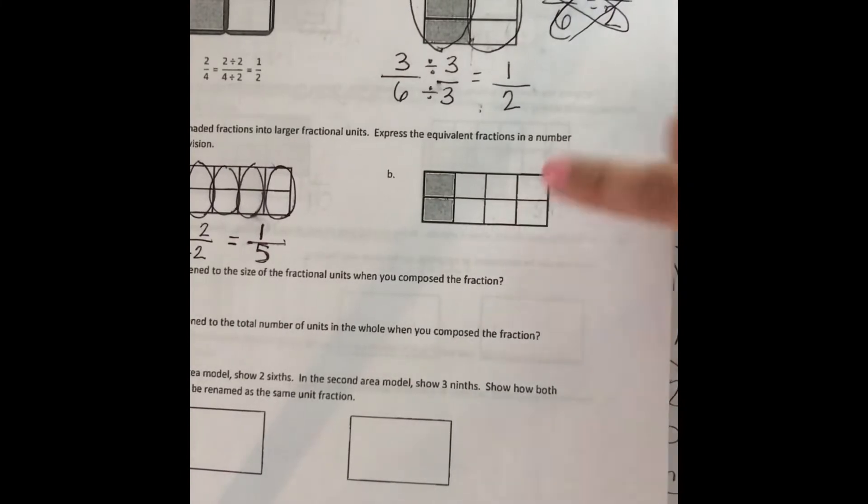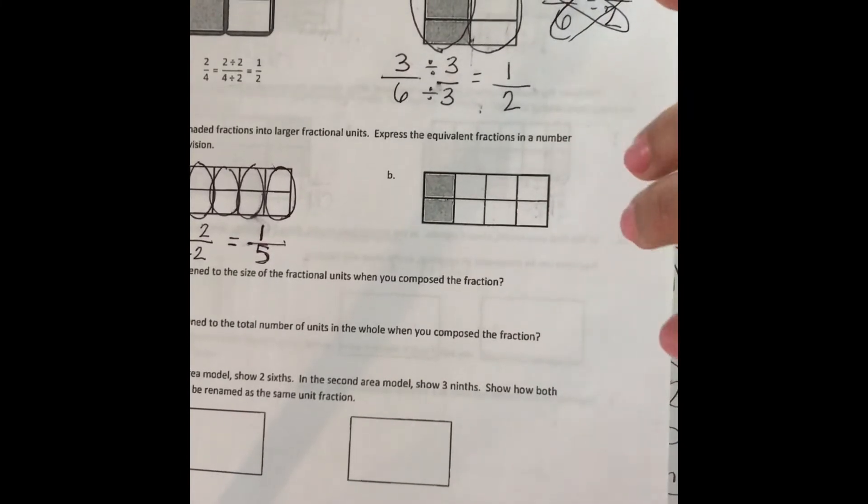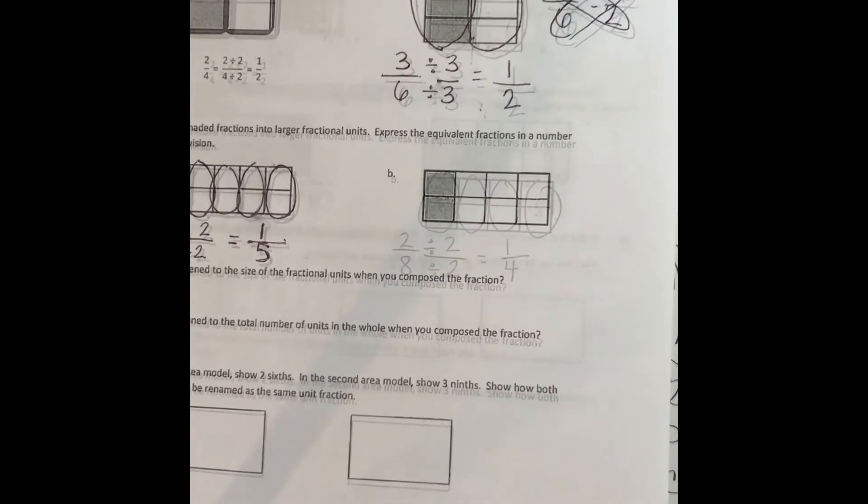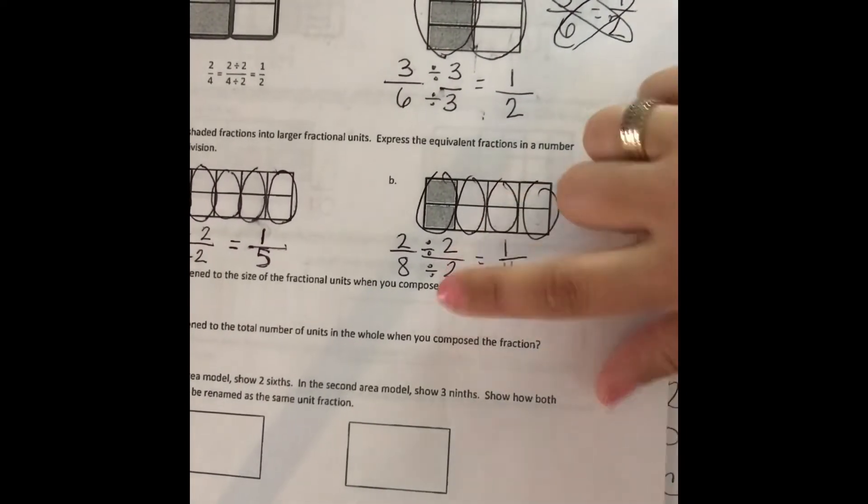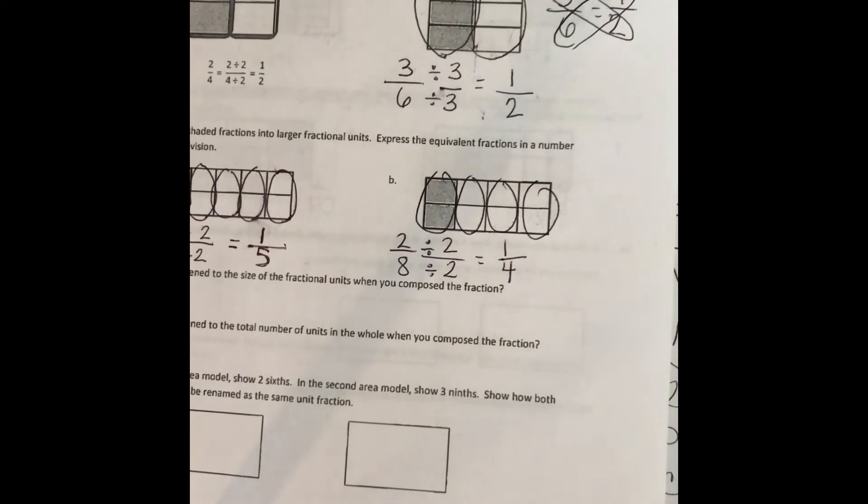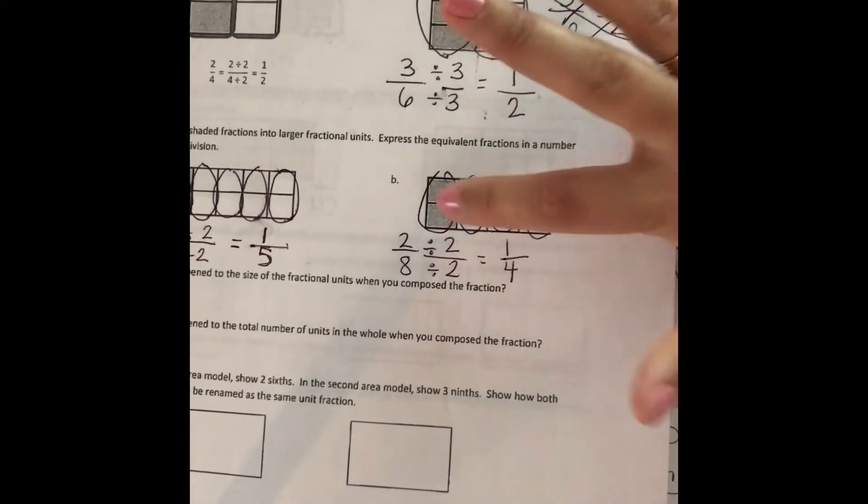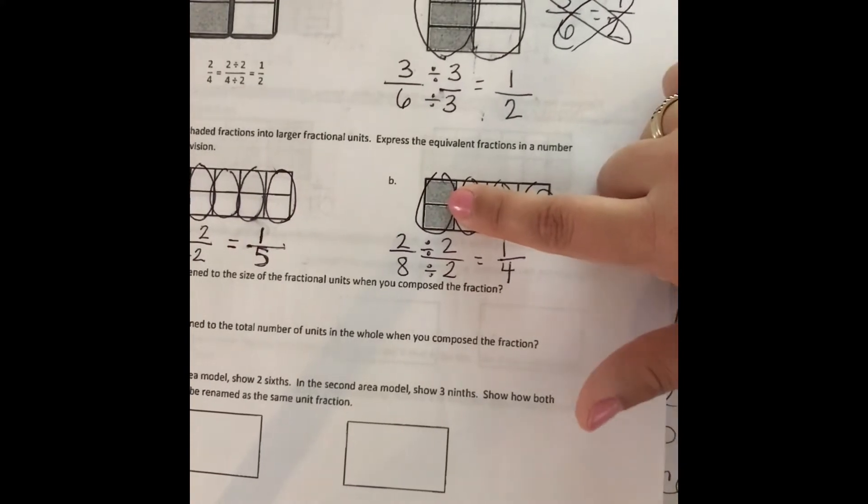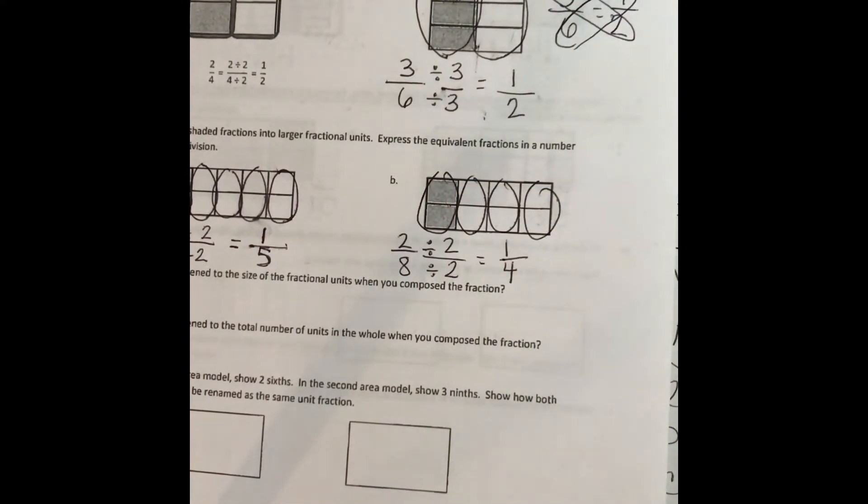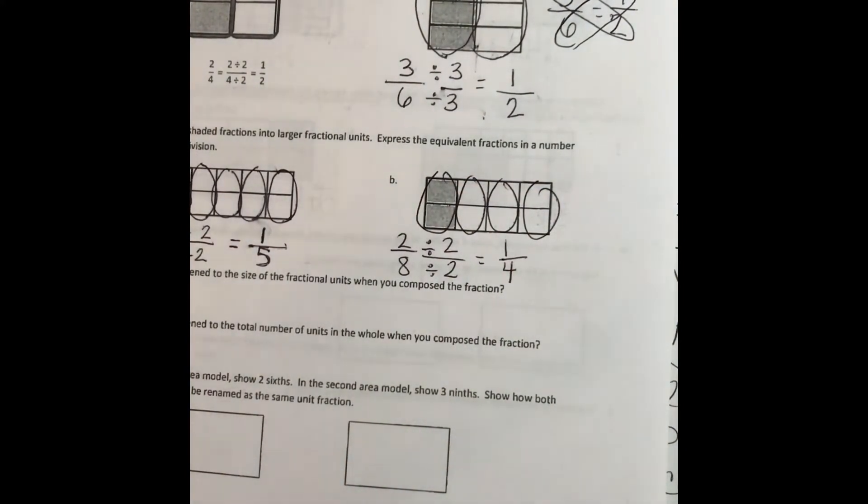I want you to try B by yourself. Pause your video and try it. Then check back with me to see if you did it correctly. Hopefully if you did this correctly, you divided by two and you made groups of two. For the total of all eight, we were able to make four groups of two. And the part shaded in, we were able to do one group of two.